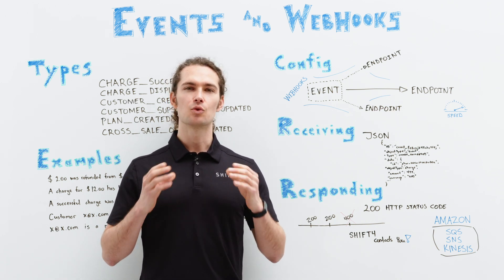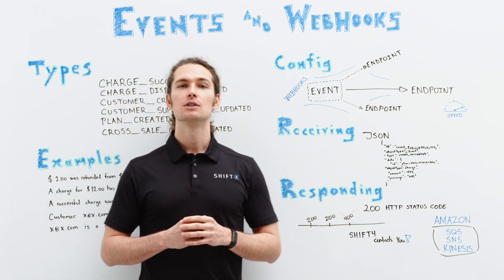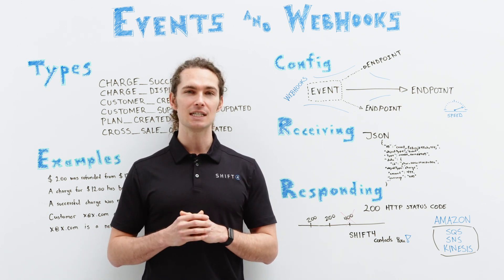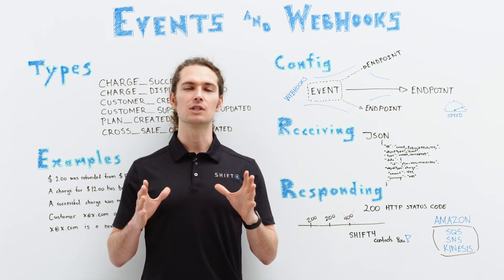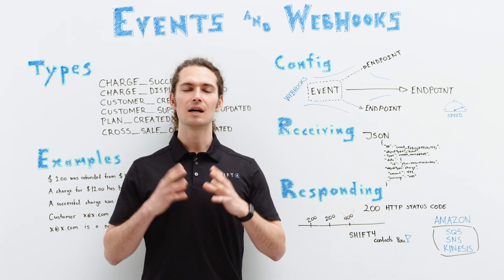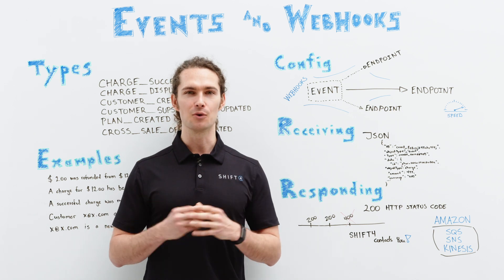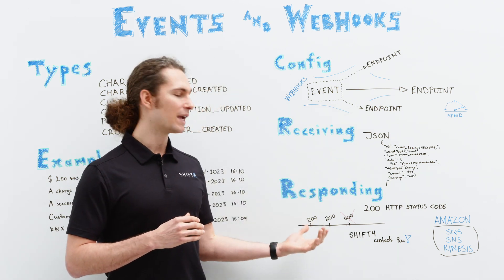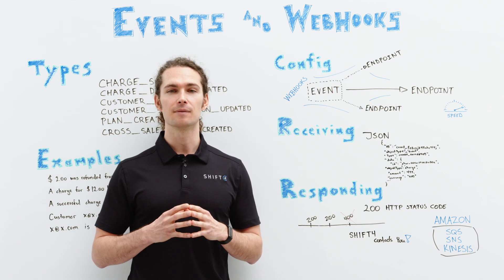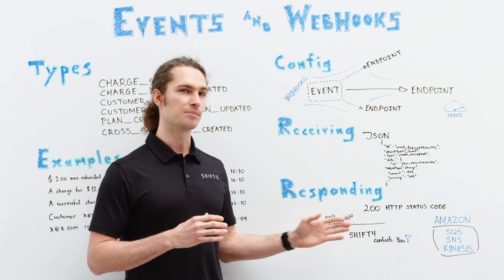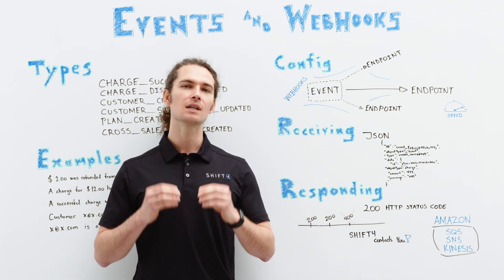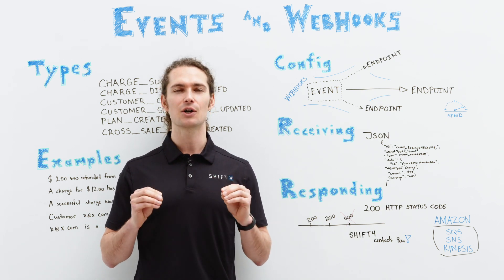And last but not least, responding to webhook requests. To successfully process a webhook request, merchants need to return a 200 HTTP status code. All other status codes that are returned will result in a failed delivery. Shift4 sends the merchant's information about the events to the corresponding webhook URL. In the example, we have successfully returned a 200 code. Again, an event happened, successfully returning 200. Yet we see an error on the third attempt, because the returning code is 400, or another status code.